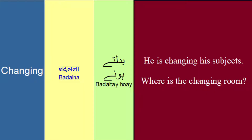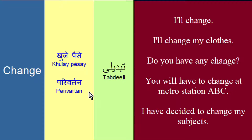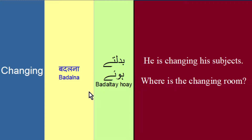Doostoon, word 'changing' change se nikla hai, aur hum discus ker chukay hain ki change ke different meaning hootay hain. Isi tarah changing ke bhi different meaning hootay hain, jis mein se ek present continuous ya past continuous ke liye use hota hai, jiska matlab hai 'badaltay hootay hain'. Change ka ek meaning hota hai badalna, iske alawa tabdeelie, pariwartan, aur khulay paisay. Changing ka meaning hota hai 'badaltay hootay hain'. Present continuous, future continuous ya past continuous ke liye bhi changing ka word use karte hain.